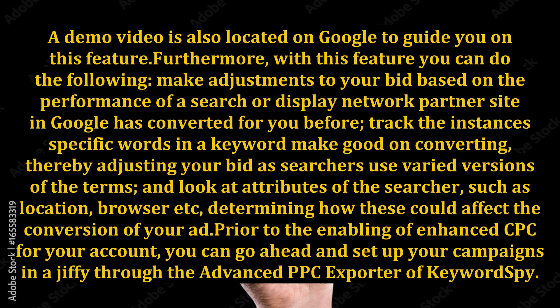Furthermore, with this feature you can do the following: make adjustments to your bid based on the performance of a search or display network partner site that has converted for you before; track instances where specific words in a keyword perform well in converting, thereby adjusting your bid as searchers use varied versions of the terms; and look at attributes of the searcher such as location and browser, determining how these could affect the conversion of your ad.